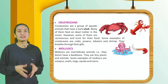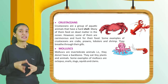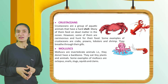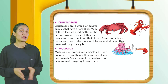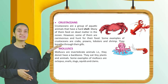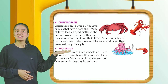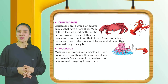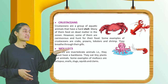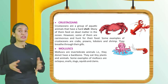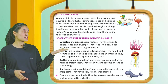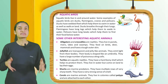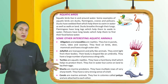Mollusks: Mollusks are invertebrate animals — that is, they do not have a backbone. They eat tiny plants and animals. Some examples of mollusks are octopus, snails, slugs, squids, and clams.